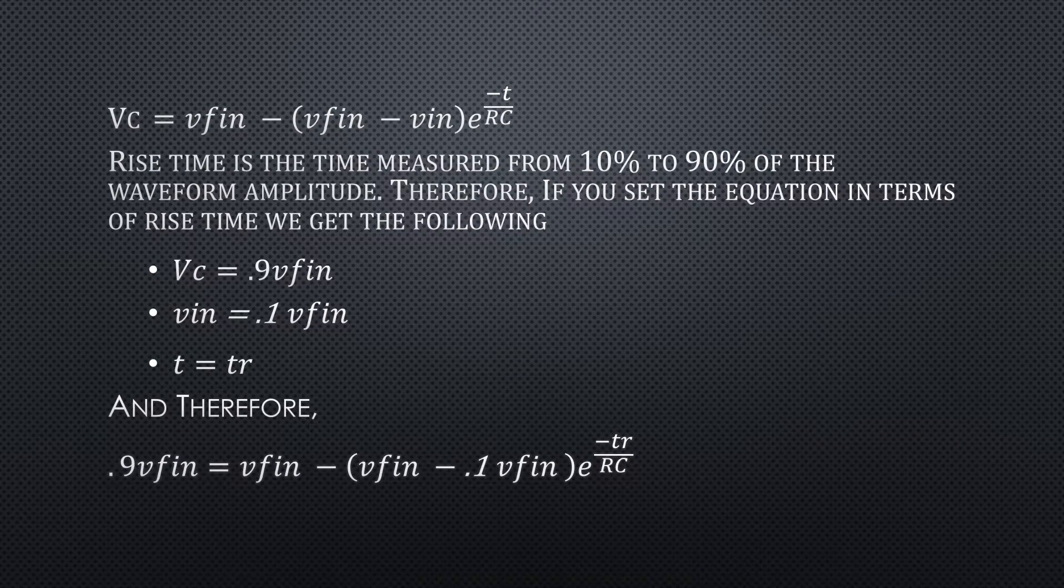Now let's take our capacitive charge formula and put the entire formula in terms of rise time. VC should equal 0.9 V_fin, V_in equals 0.1 V_fin, and t equals tr. Therefore, 0.9vfin equals vfin minus the quantity (vfin minus 0.1vfin) times e to the negative tr over RC.